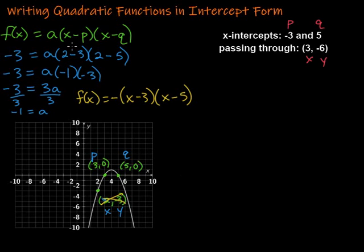We're going to start by substituting everything in so that we can solve for a. My f(x) is also known as Y, so negative 6 equals a times X. In this case, it's 3, and then we've got minus P. So right here, minus, and the P is negative 3, so be careful there. So 3 minus negative 3. And then X again is still 3, minus Q, in this case, so minus 5.